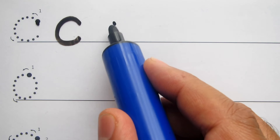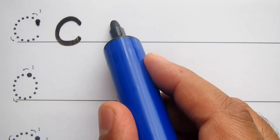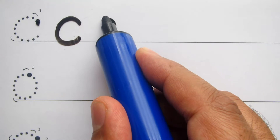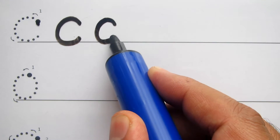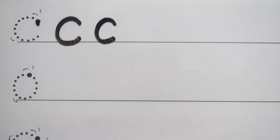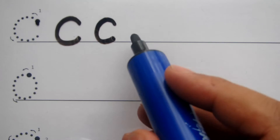The first letter is the lowercase C. You start there, go up, around, to the line, and stop. It's a short letter — up, around, to the line, and stop there. It's as simple as that, the lowercase C.